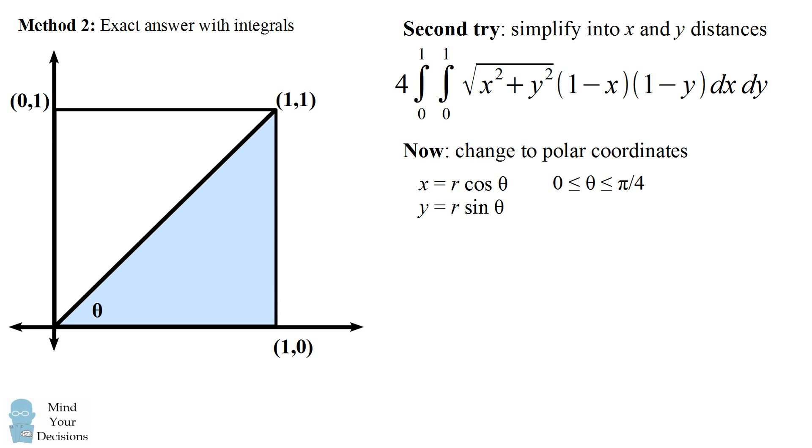Next, we want to know the range of the radius r. r starts out as 0, and it will range depending on the angle theta. Since the base of this triangle is always 1, the value for r will be 1 divided by cosine of theta, which is also equal to secant theta.